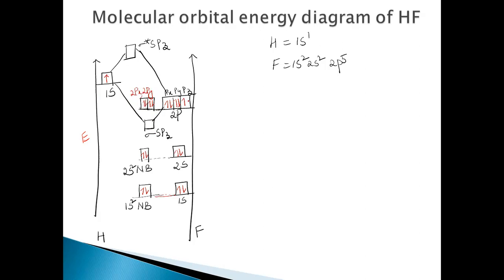One electron from the H 1S orbital and one electron from the fluorine PZ will go into the bonding molecular orbital, so the bonding molecular orbital becomes filled. This is the molecular orbital energy level diagram for hydrogen fluoride, where the 1S orbital of hydrogen linearly combines with the 2PZ orbital of fluorine because they are of the same symmetry and almost the same energy — that is why the SPZ combination occurs. The non-bonding electrons are from 1S2, 2S2, 2PX, and 2PY.